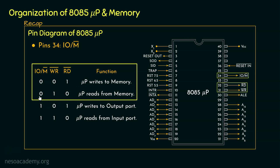On the other hand, if IO/M bar is 0 — still communicating with memory — and WR bar is set to 1 while RD bar is reset to 0, this means the microprocessor reads from the memory. Both WR bar and RD bar are active low pins. The microprocessor can either read from memory or write to memory, but cannot perform both at the same time. When it decides to write, RD bar should be inactive — set to 1 — and WR bar reset to 0, indicating the microprocessor is interested in writing.